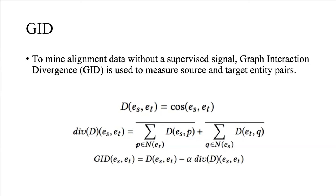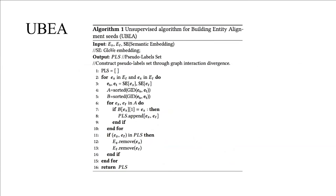For alignment with results as supervised signals, graph interaction divergence is used to measure source and target entity pairs. GID is a cosine-based similarity measure. Different from cosine, this is the similarity measure of neighbor nodes when calculating similarity. In the UBA algorithm, an unsupervised algorithm is created to build a pseudo-label set based on the GAT model. For each pair of entities, we construct equations to find candidate entity-label pairs and aggregate all mined cross-lingual knowledge graph entity pairs into a pseudo-label set.